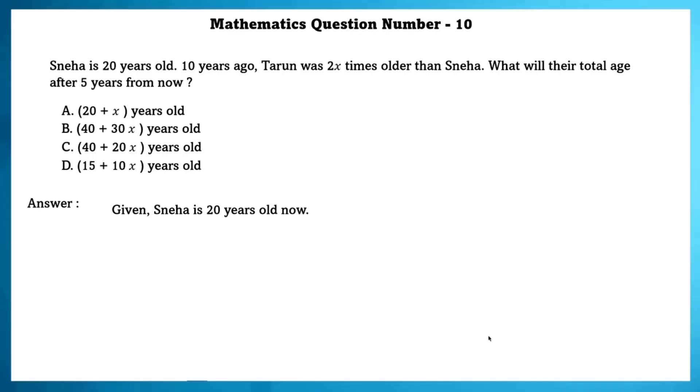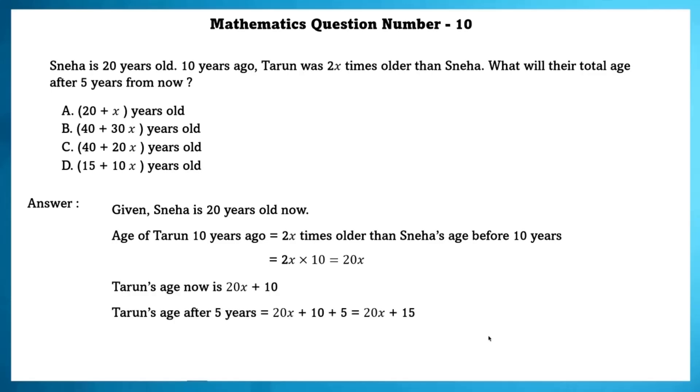Given Sneha is 20 years old now. Age of Tarun 10 years ago is equal to 2x times older than Sneha's age before 10 years. That is equal to 2x into 10 which is equal to 20x. Tarun's age now is equal to 20x plus 10.